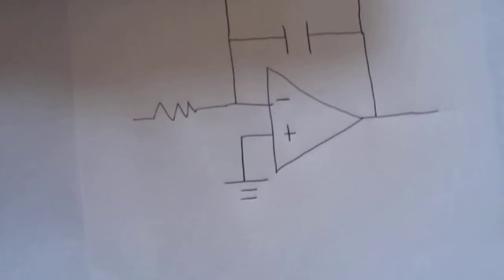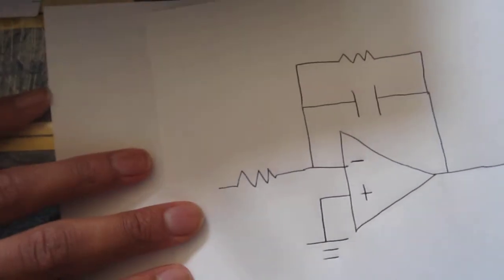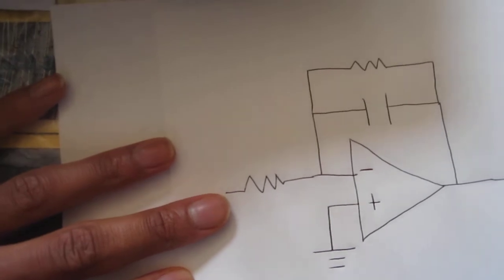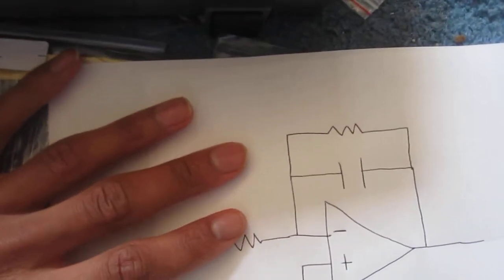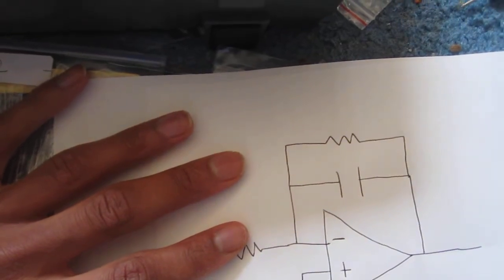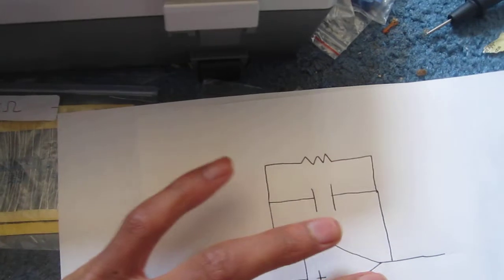So the schematic for this circuit can be seen here. It's just a resistor at the input of the inverting terminal of the op-amp and a resistor and capacitor in parallel going from the inverting terminal to the output.